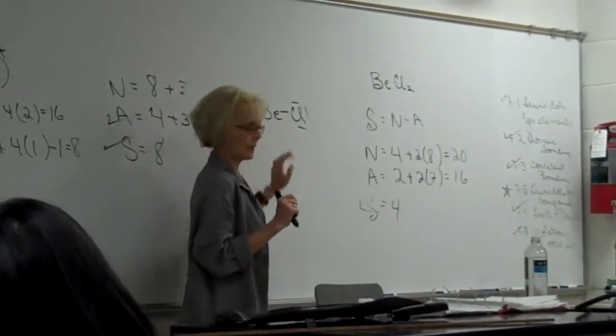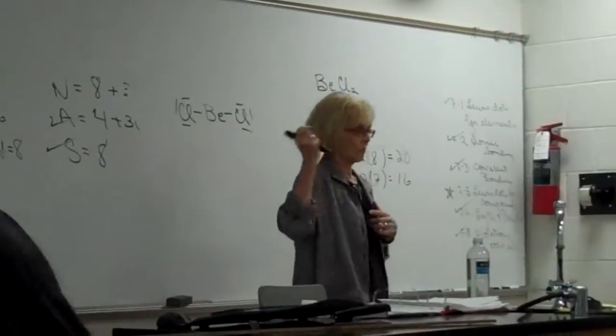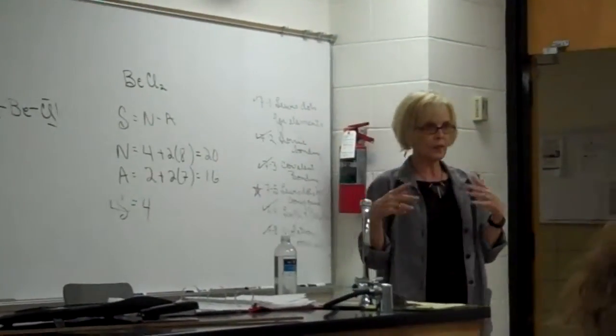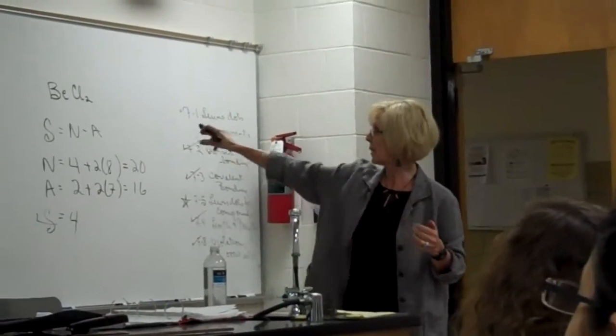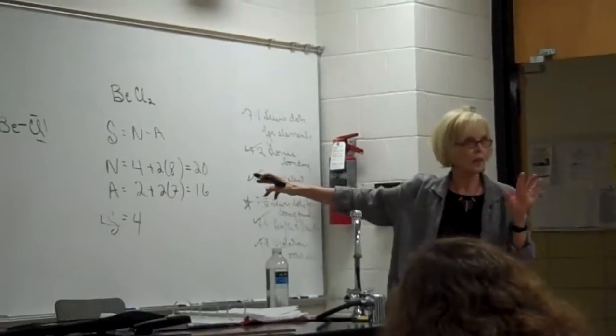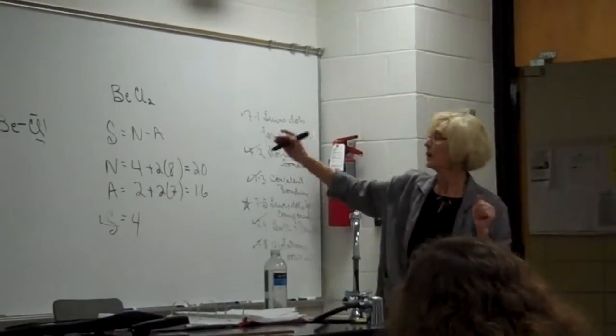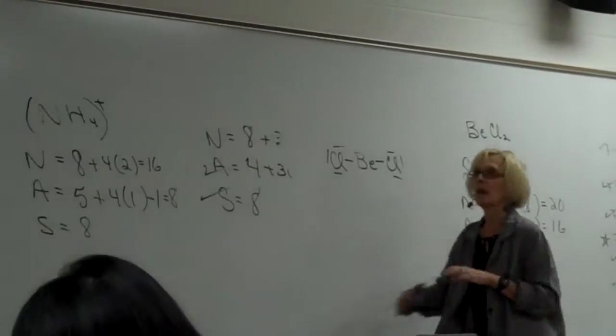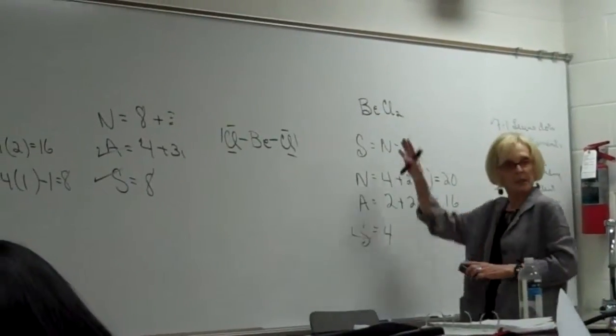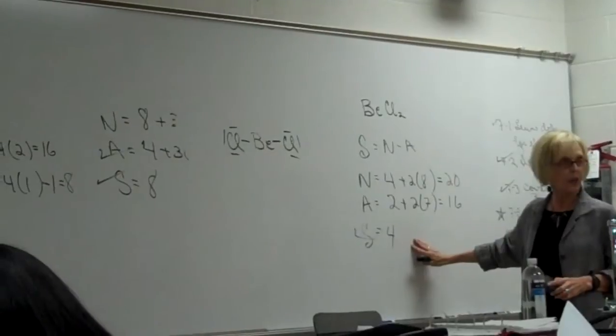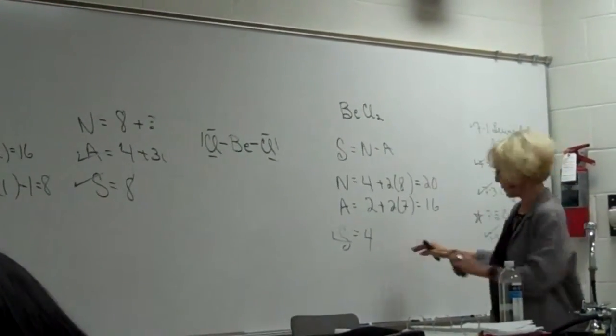So does everybody have an octet that wants it? Chlorine does, chlorine does. Beryllium doesn't want it, it wants four. Rule two. It's happy. If I say go use a Lewis dot structure on this substance and I'm thinking use that thing and I'm thinking it's got some covalent character.